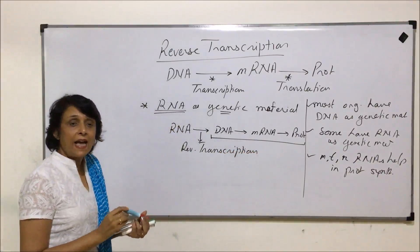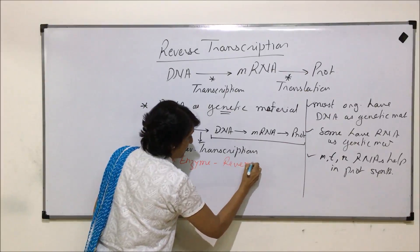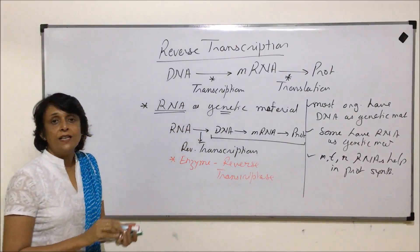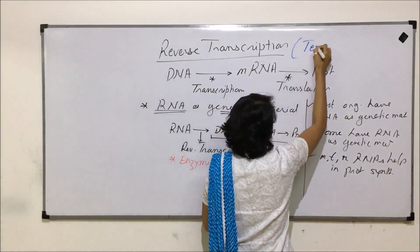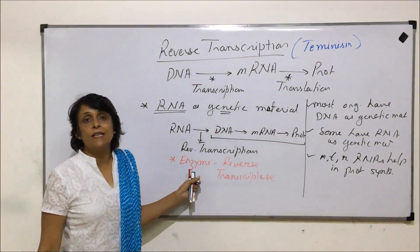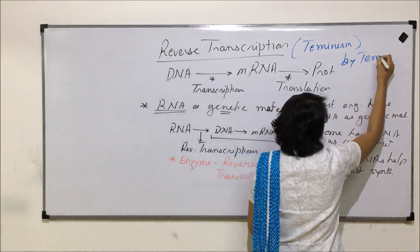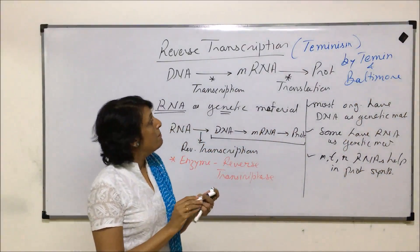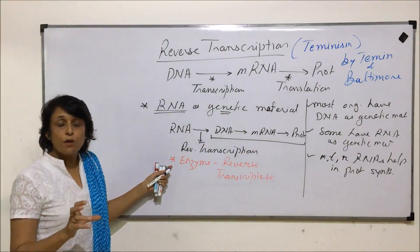There is a special enzyme required for reverse transcription called reverse transcriptase. This reverse transcription process is also known as Teminism, because this process was explained by two scientists, Temin and Baltimore, and the process has been named Teminism after Temin.